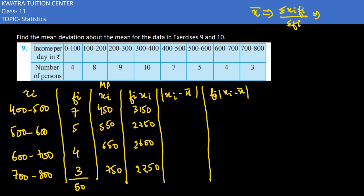Now 50 is the total frequency. So the total is coming out to be 17,900. And 17,900 divided by 50.